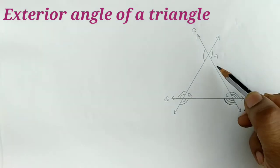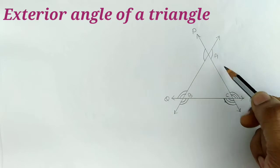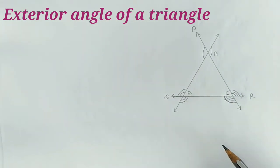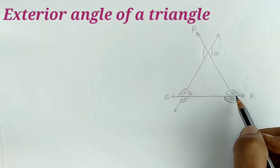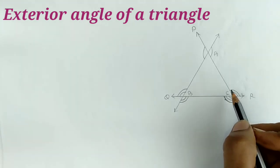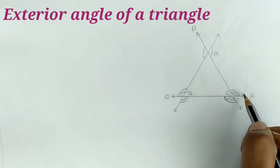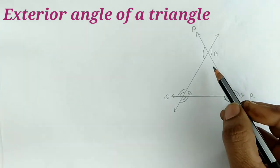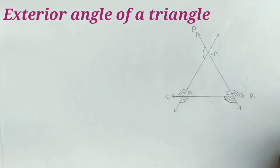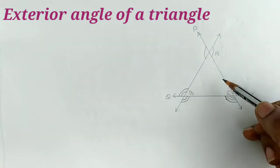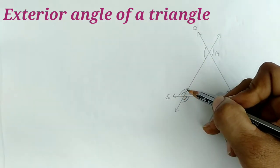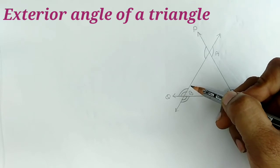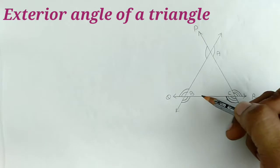See here, angle ACR is an exterior angle of triangle ABC. And similarly, angle ABQ and angle BAP are also exterior angles. So these angles are the exterior angles of triangle ABC, which include angle ABC and angle BAC.